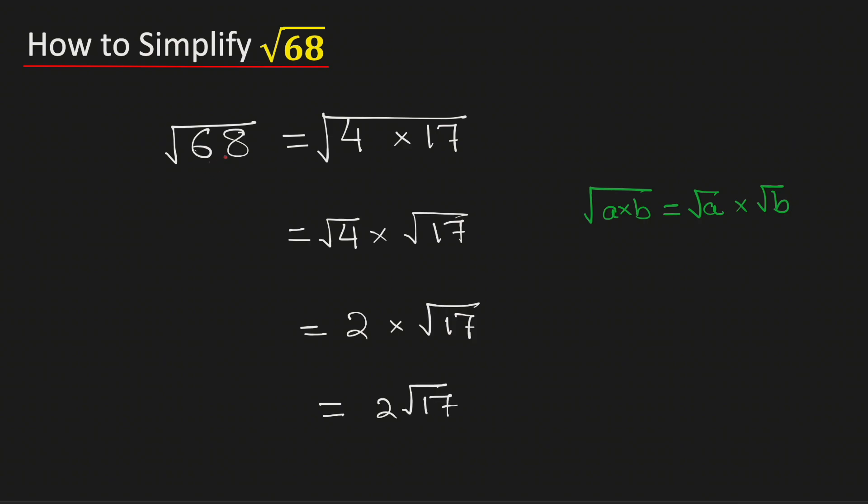Therefore, square root of 68 in its simplified radical form is equal to 2 root 17. And this is our final answer.